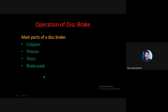Brake pads are the components that undergo high friction, because they are pushed by the piston towards the disc. The materials must be capable of withstanding high friction and high pressure. This friction results in slowing or stopping of the vehicle. Brake pads are made up of many materials such as asbestos, ceramics, metallic or semi-metallic materials. These four — caliper, piston, disc, and brake pads — are the main parts of a disc brake.